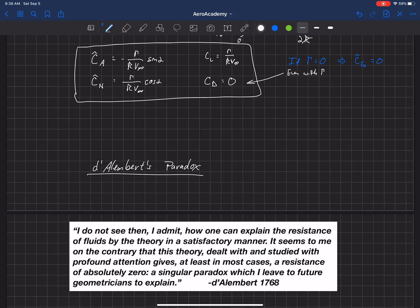In the previous lecture, we found that the drag on a circular cylinder is exactly zero as predicted by inviscid theory or by potential flow theory, even with a positive gamma. So we found that the drag is equal to zero.